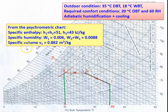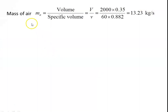Reading values: h1 = h2 = 51, h3 = 43 kJ/kg. Specific humidity: w1 = 0.006, w2 = w3 = 0.008 kg/kg of air. Specific volume at inlet condition is 0.882 cubic meter per kilogram. These are the properties taken from the psychrometric chart.